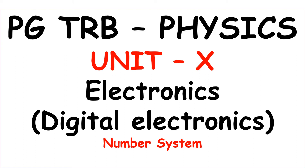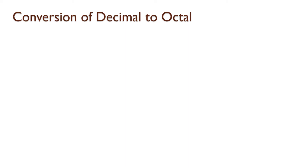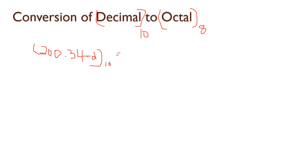Welcome to SS Academy for Physics. Today we discuss Unit 10: Electronics, Digital Electronics, Number Systems. Let us discuss about the conversion of decimal to octal. The base of decimal is 10, and the base of octal is 8. For example, take the number 200.342 as a decimal number and find the octal equivalent.